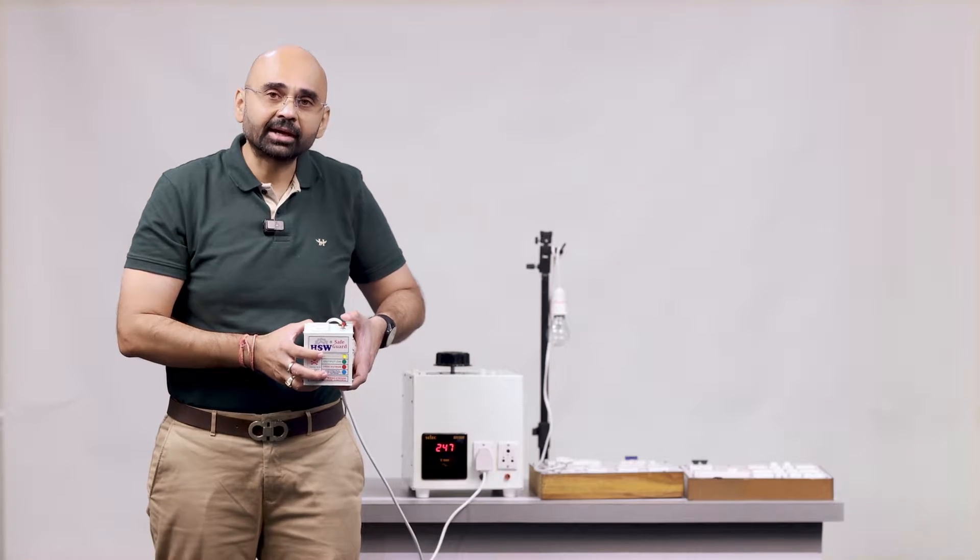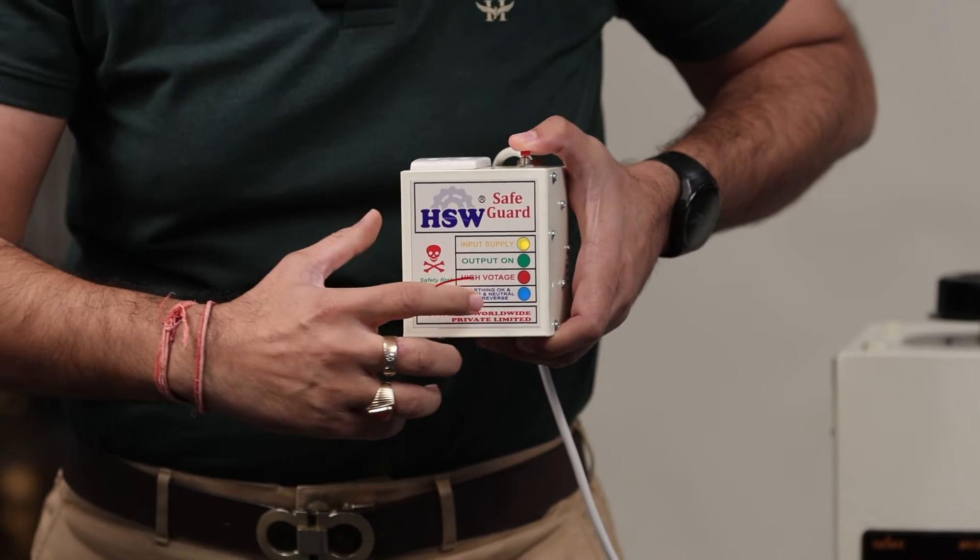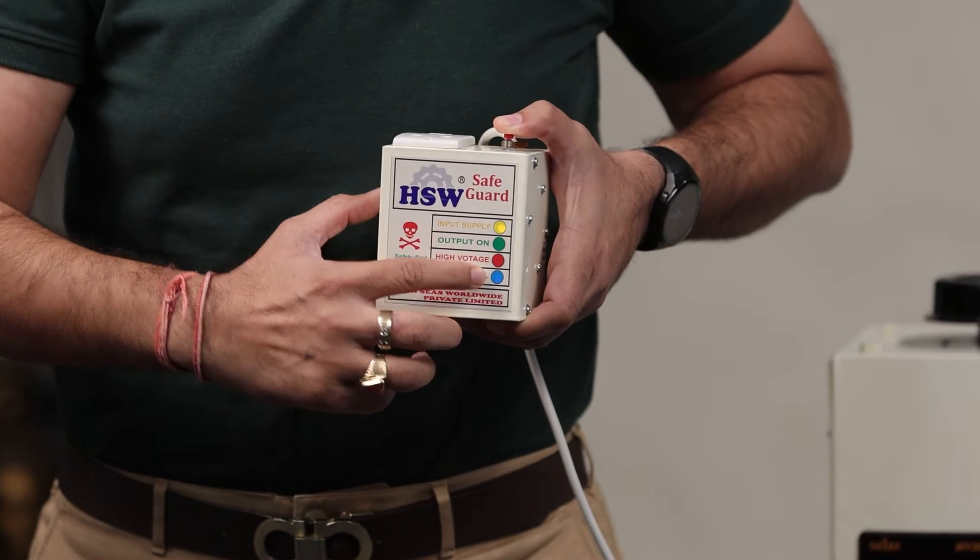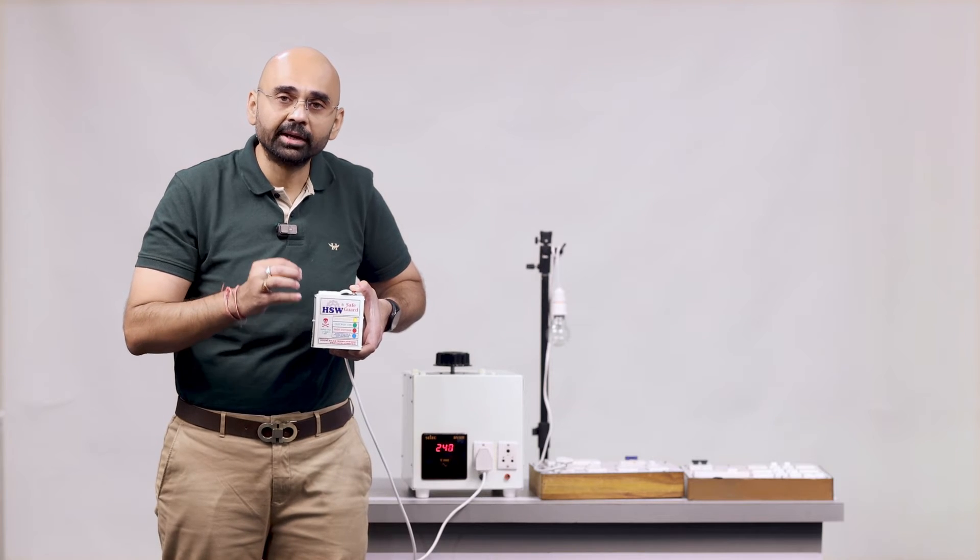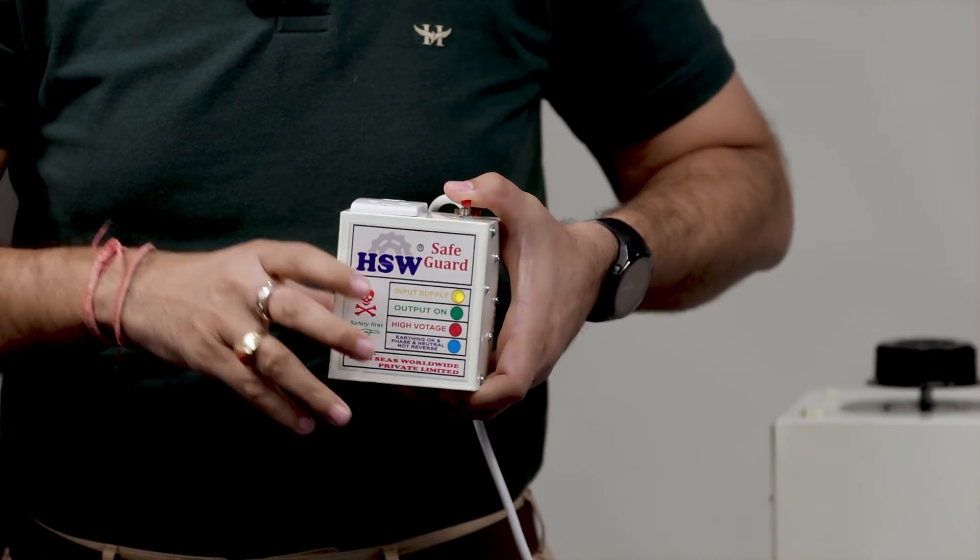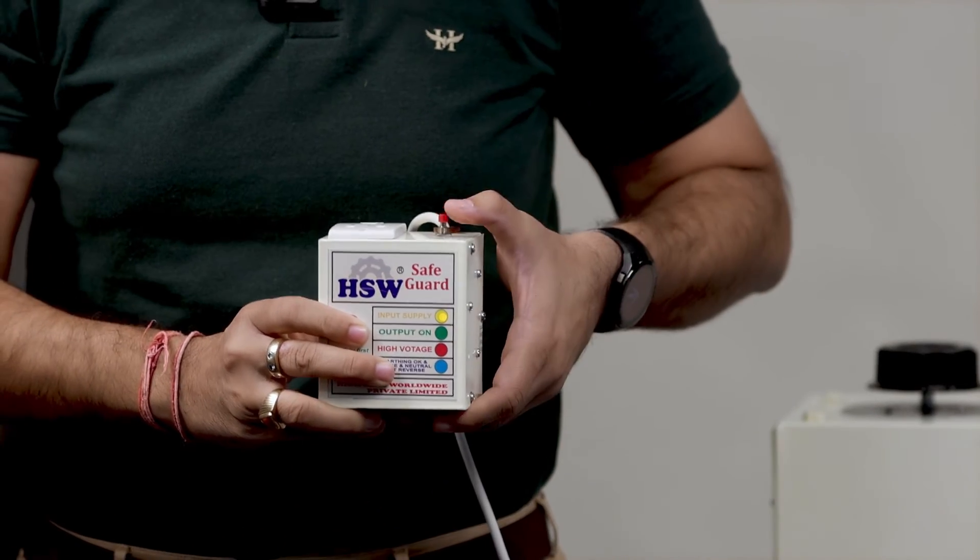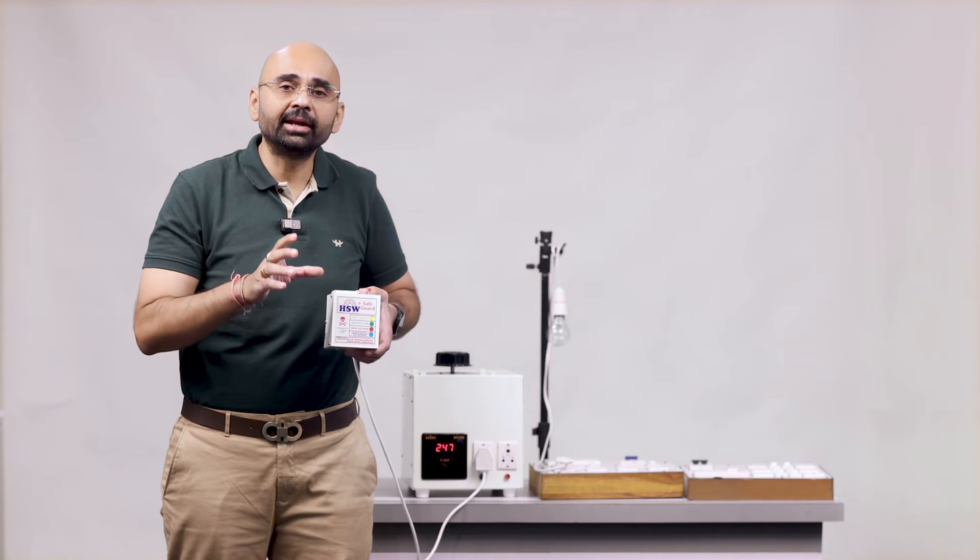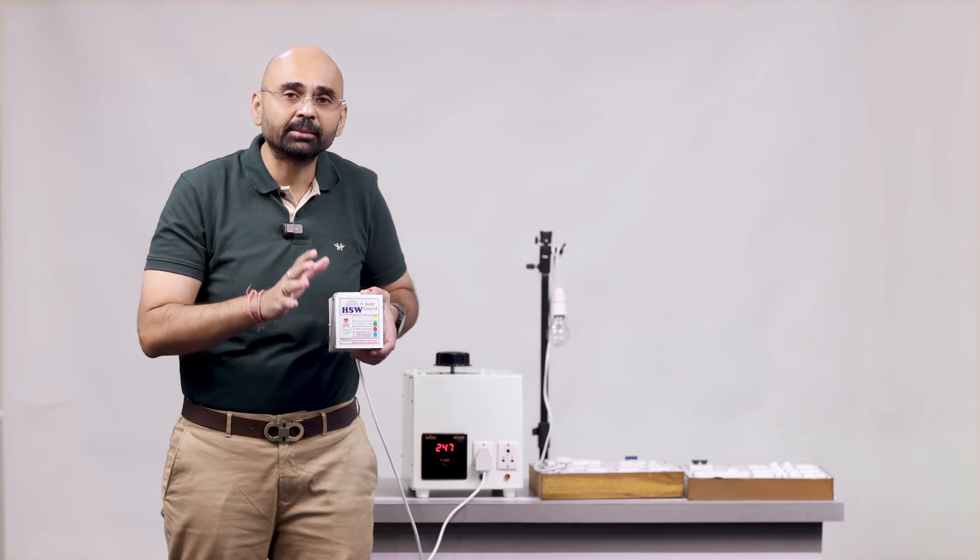So now as soon as I press the switch you can see the blue light has turned on. That means that earthing and neutral reverse electric supply is perfect. If on the pressing of earthing test this blue light is not on, that means neutral or electric reverse supply has some problem.